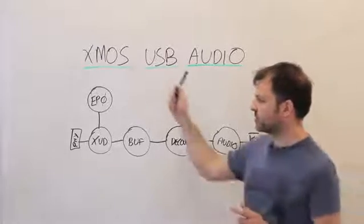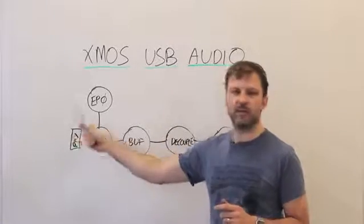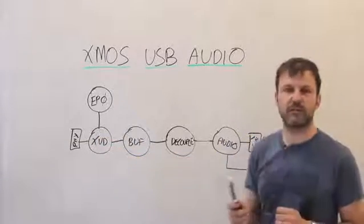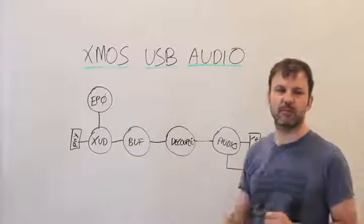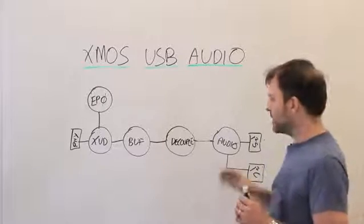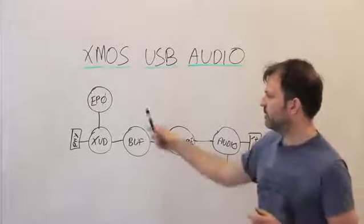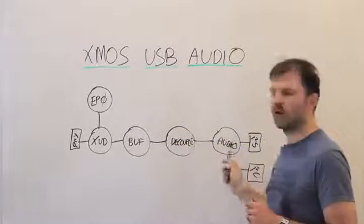What it does is transport bit-perfect audio from the host over USB Audio Class either 1 or 2 out to an I2S stream in either direction, supporting input-output. So that's the software reference design. What I'd like to do is just talk you through each of these blocks and how they work and what they do.